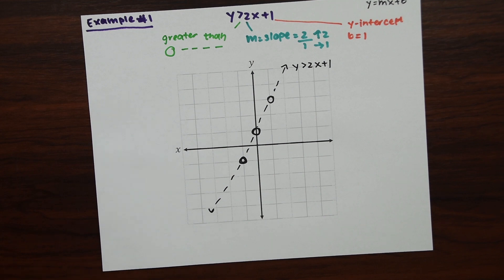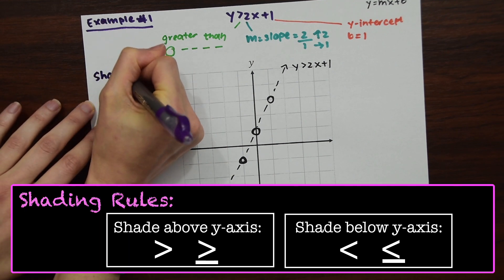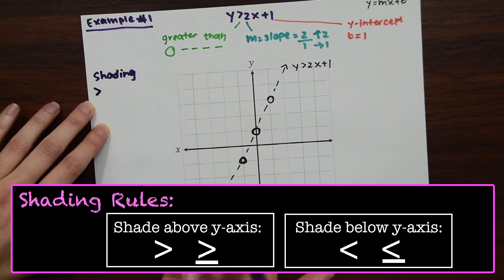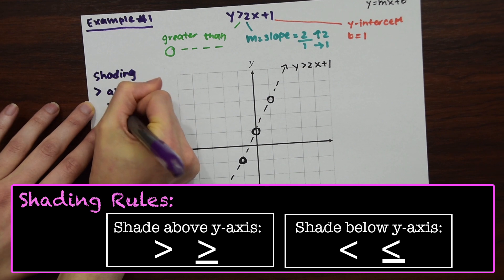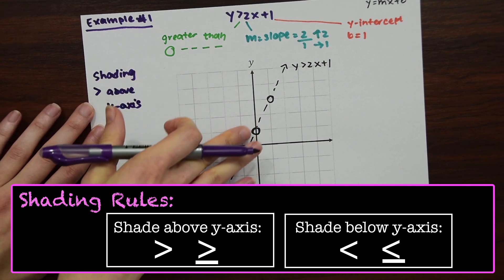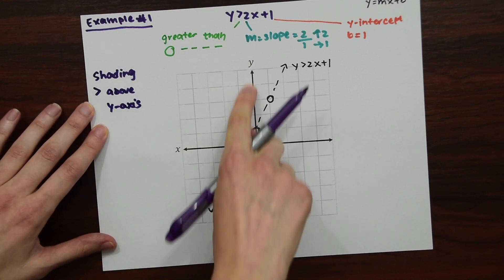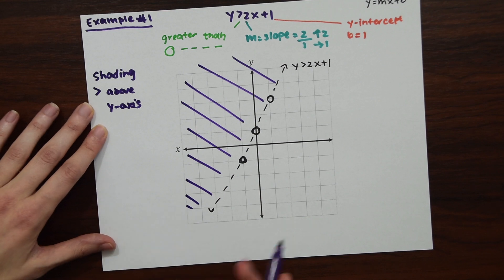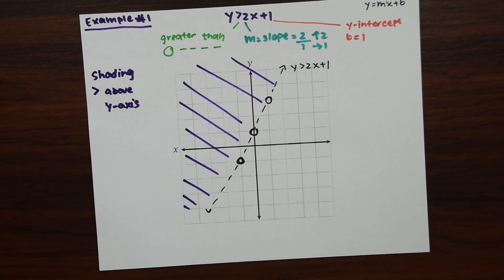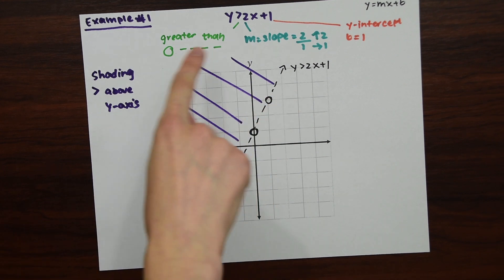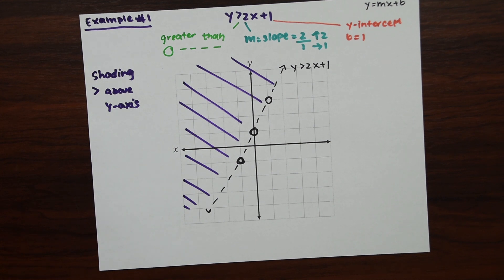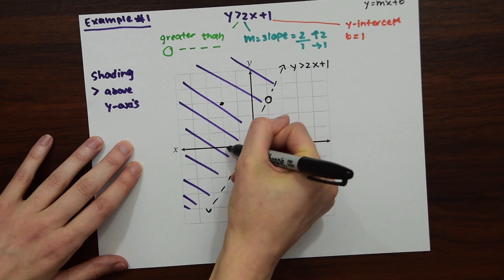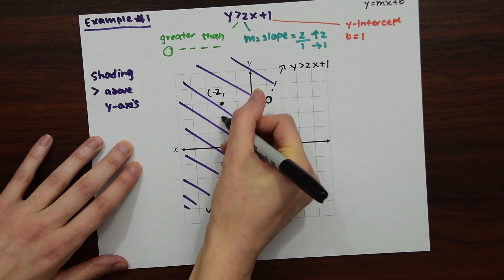The line itself isn't included in the solution, so that's where shading comes in. Since we have greater than, we shade above the line — we want all those positive y-values above. So we shade everything to the left and above this line. Everything in the shaded region is our solution, but not the line itself.